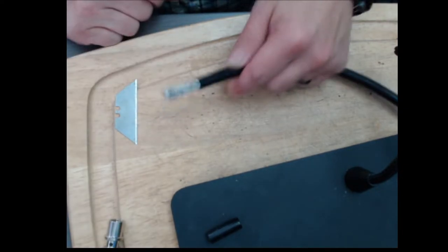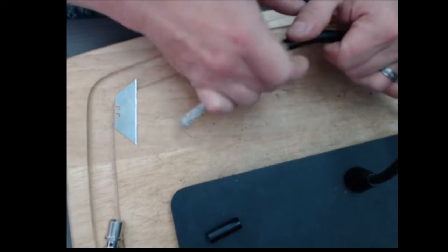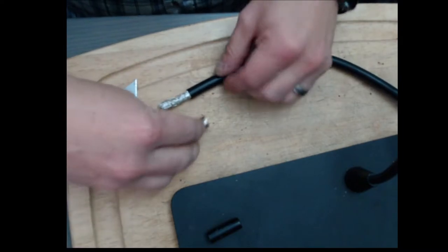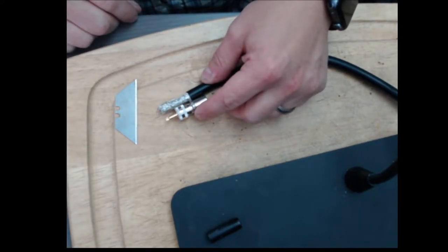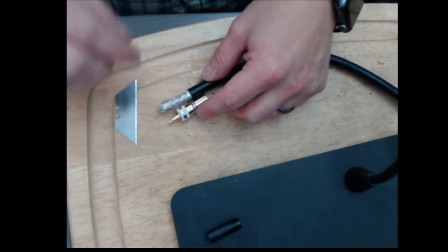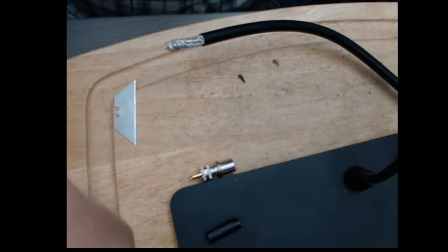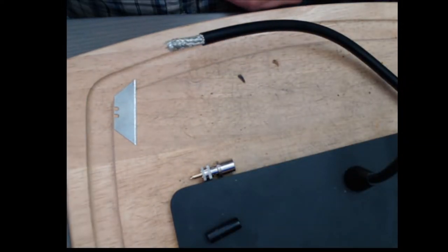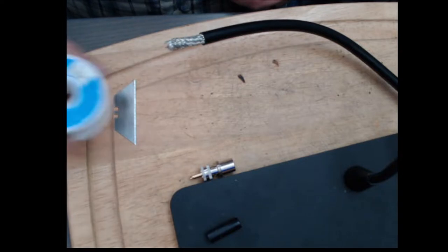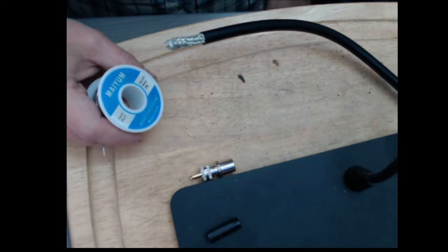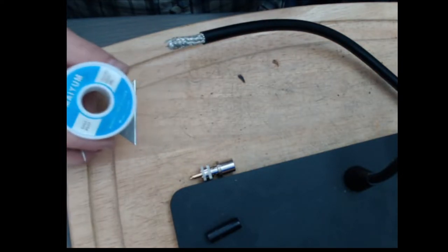And pull that off. And then you've got your grounded shield in here. And again, it's going to sit about like that inside the connector. I like to go ahead and tin that up on the outside here. Go ahead and turn the solder and iron on. And I just use rosin core solder - a little quicker, a little easier.